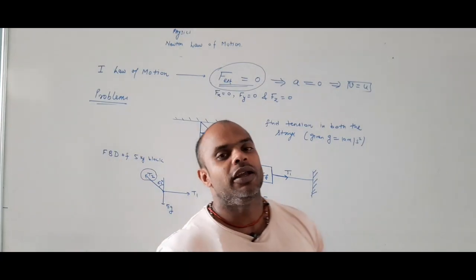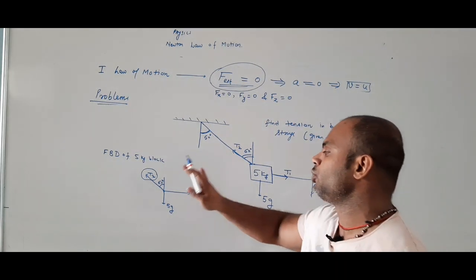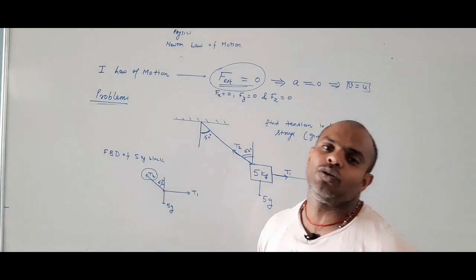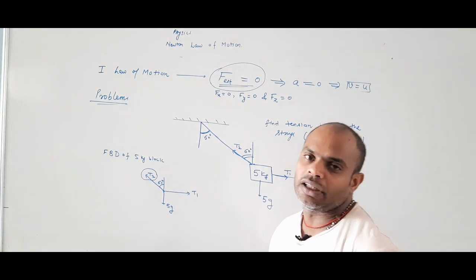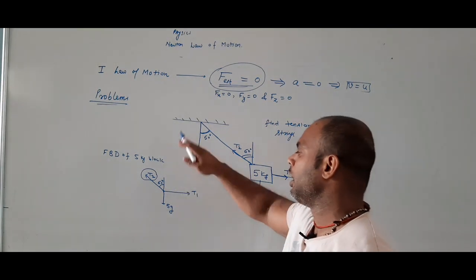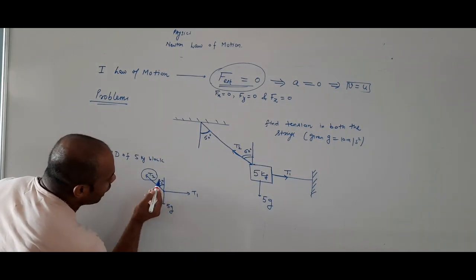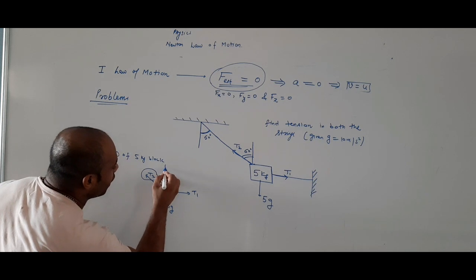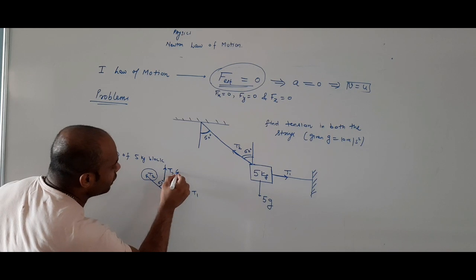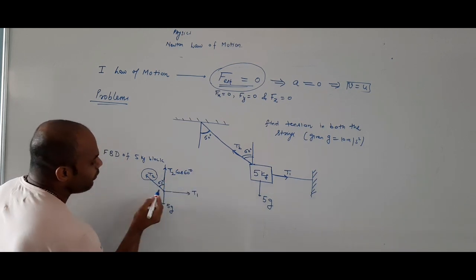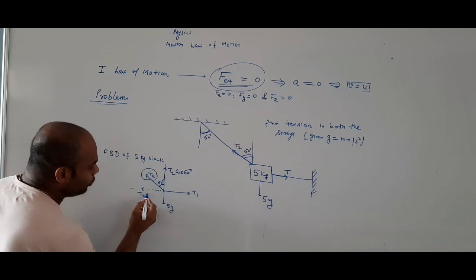Whenever there is such a problem, take two axes: x and y. Whatever force does not lie along the axes, you resolve it. Resolution of vectors — as studied in the last chapter. Resolving T2: the horizontal component is T2 cos 60, and the vertical component is T2 sin 60.